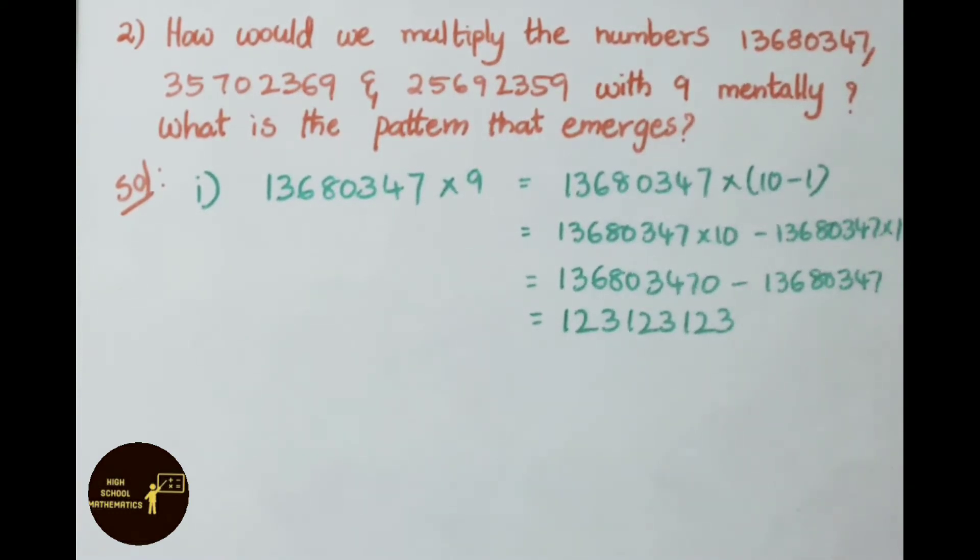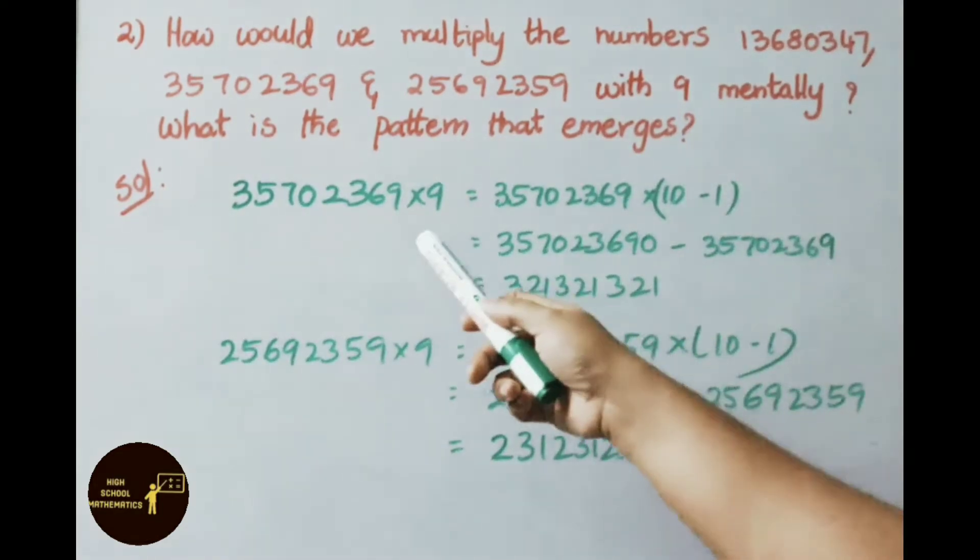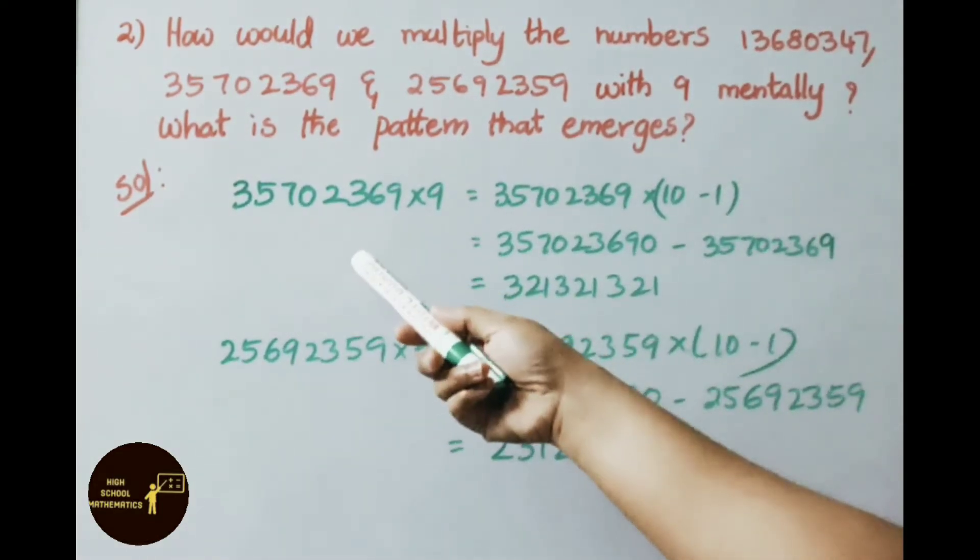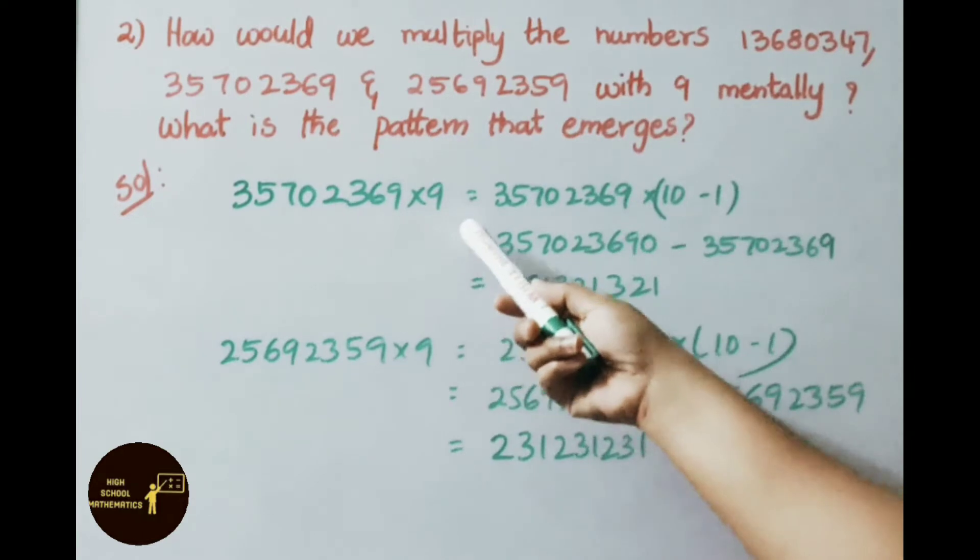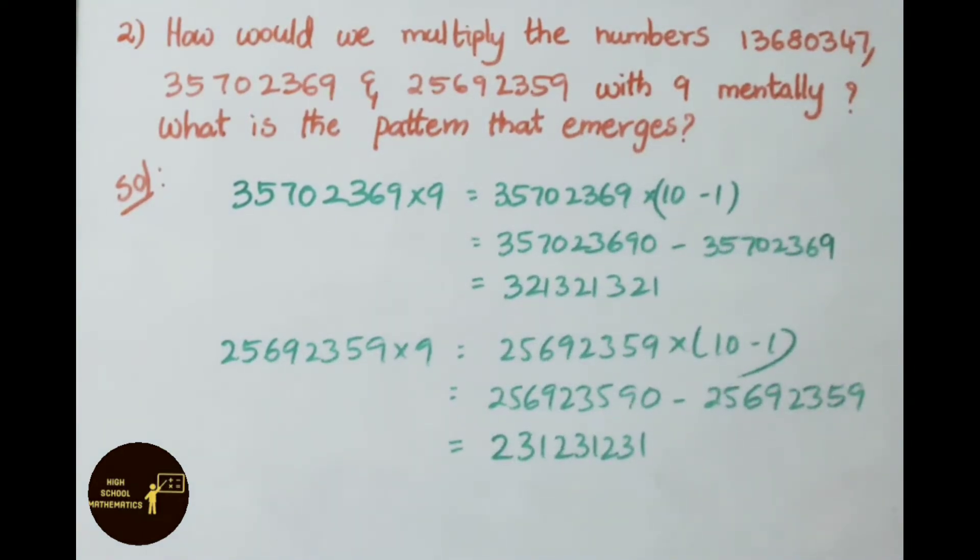See the second number: 3 crore 57 lakh 2369 multiplied by 9. 9 can be written as 10 - 1. So the given number multiplied with 10, we get the answer 35 crore 70 lakh 23690, minus the given number multiplied with 1, we get the same number, that is 3 crore 57 lakh 2369.